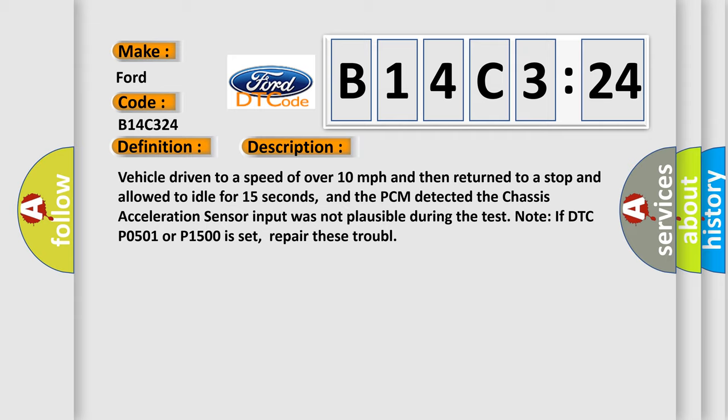Vehicle driven to a speed of over 10 miles per hour and then return to a stop and allow to idle for 15 seconds. And the PCM detected the chassis acceleration sensor input was not plausible during the test mode. If DTC P0501 or P1500 is set, repair these troubles.